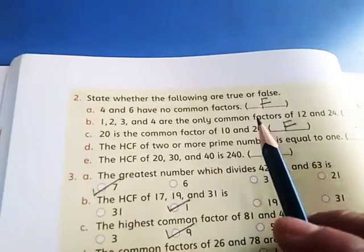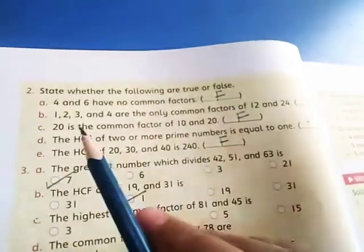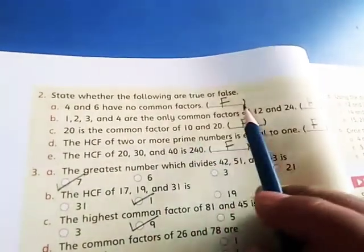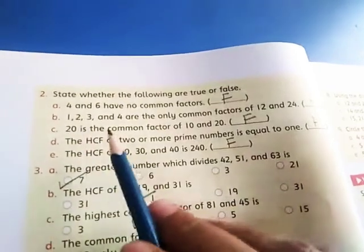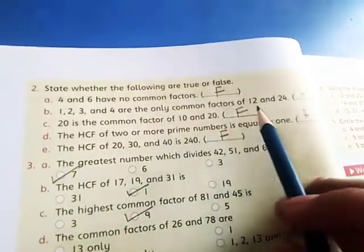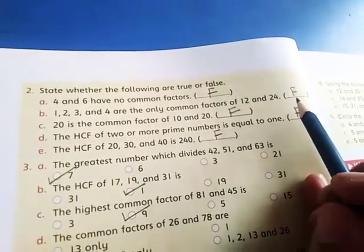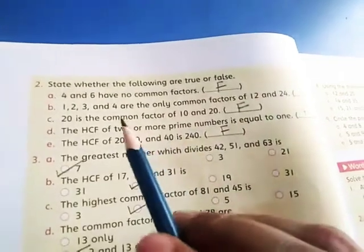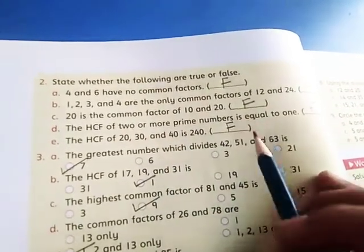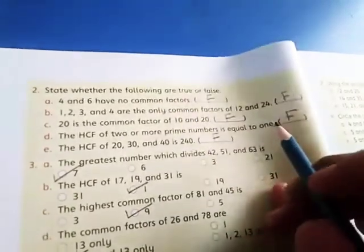Question 2: State whether the statements are true or false. 4 and 6 have no common factors - false. 1, 2, 3, and 4 are the only common factors of 12 and 24 - false. Now tell me the rest of the parts. You have to do it yourself.